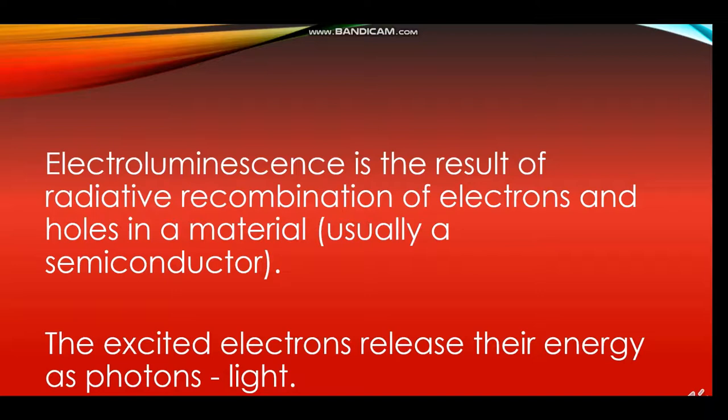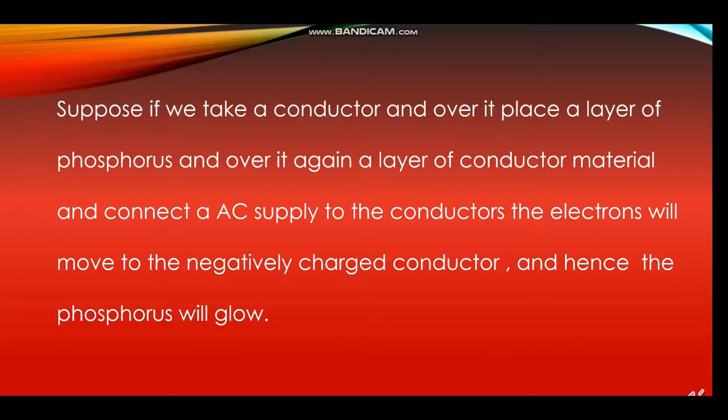Suppose we take a conductor and place a layer of phosphorus over it, and over that place another layer of conductor material, then connect an AC supply to the conductors. The electrons will move to the negatively charged conductor, and hence the phosphorus will glow.